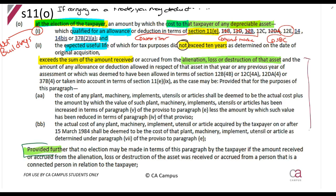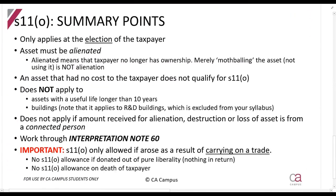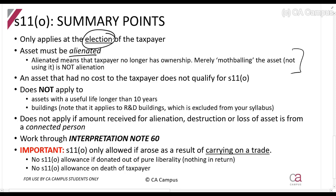There is a further restriction: no election may be made in terms of this paragraph if the amount received or accrued from the alienation, loss, or destruction of that asset was from a connected person. So you cannot use Section 11(o) if sold to a connected person. In summary: it must be at the election of the taxpayer; the asset must have been alienated; it must have a cost; it does not apply to assets with a useful life longer than 10 years or buildings; and you cannot get it for a connected person. There is an interpretation note you can work through, but this essentially summarizes everything.